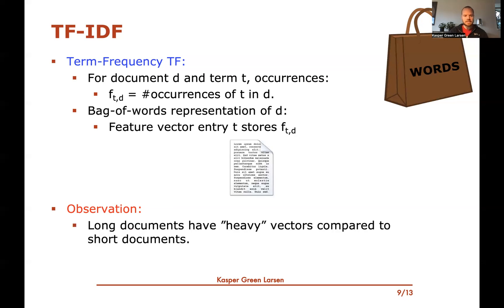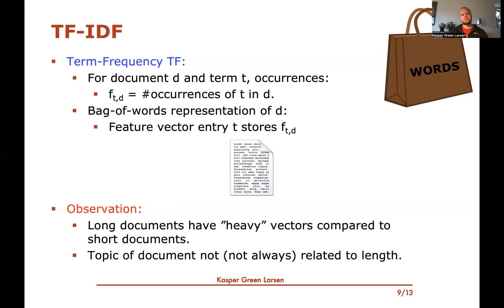The observation is that if you just store the number of occurrences of T in D, then if you have a really long text it's going to produce heavy vectors — vectors with a really large sum of weights. A short document gives a light vector with a small norm. The topic of a document isn't always related to how long it is. So it would be nice to normalize so that all text documents have vectors with about the same weight.